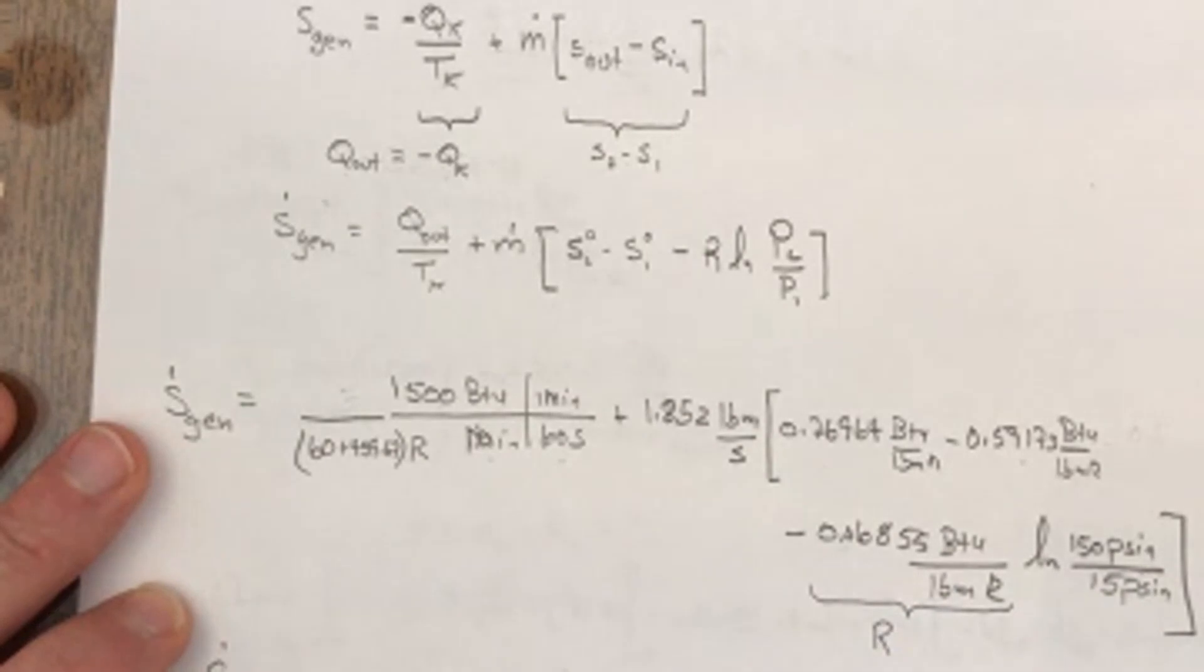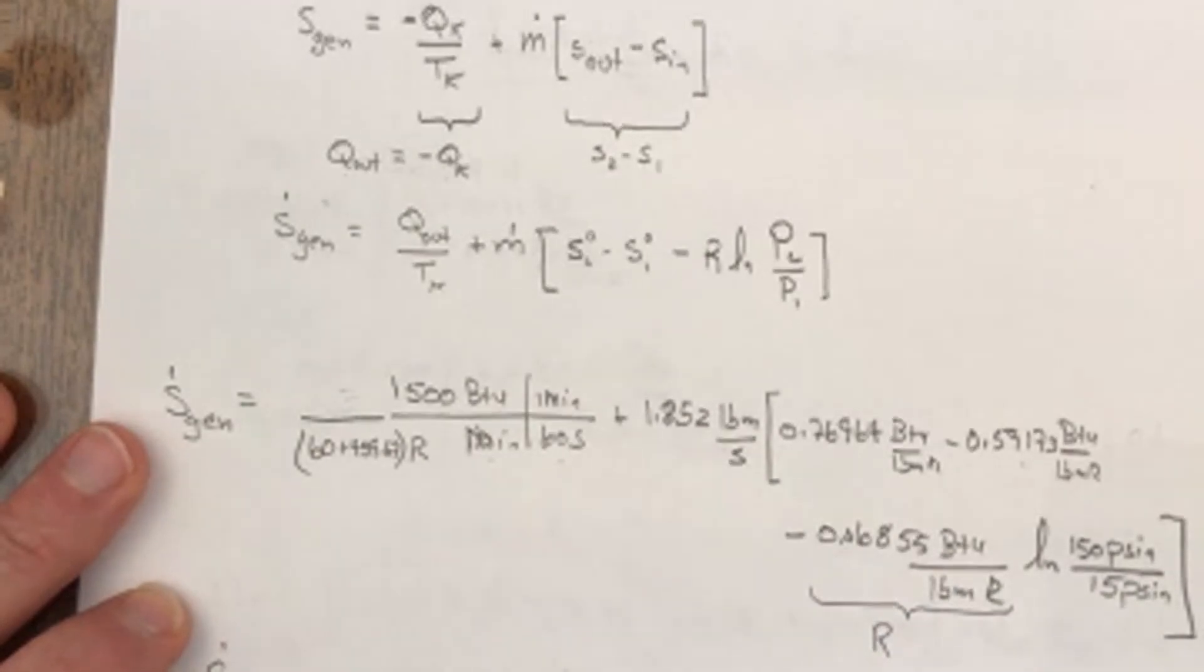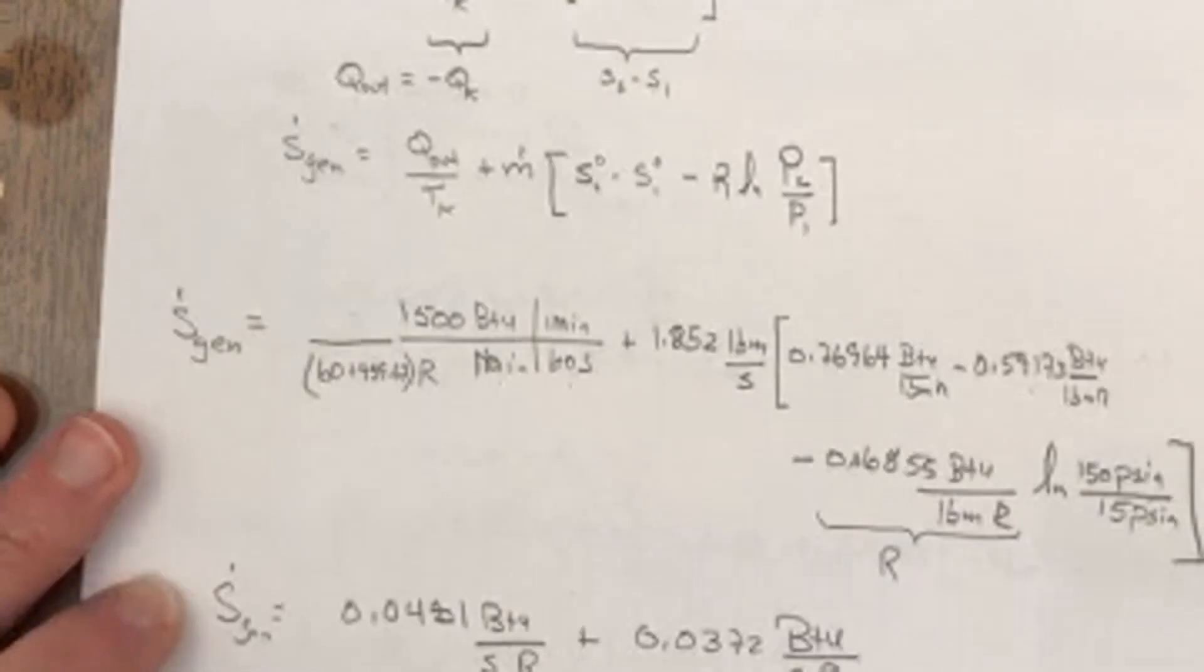And then here's your S degree 1 and your S degree 2 minus the R value, which I'm getting from the table for air, and that's a constant with respect to temperature, and then the ratio of pressures.